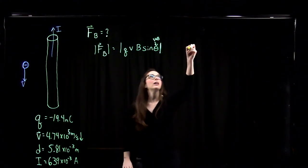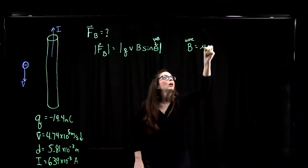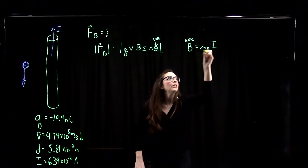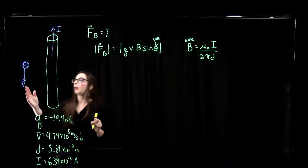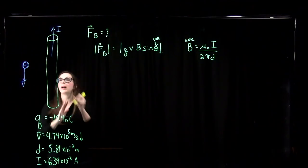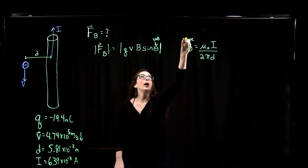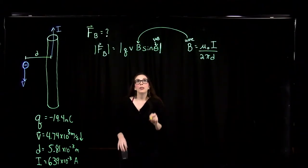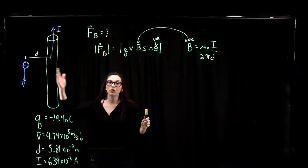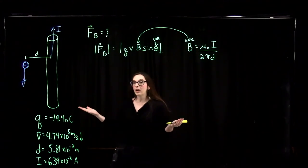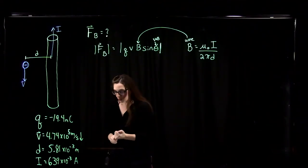This magnetic field from the wire goes into our force equation. We need to figure out the direction of the magnetic field before we can evaluate sine theta. We'll use two right-hand rules in this problem. The angle theta is between the velocity vector of the particle and the magnetic field from the wire.